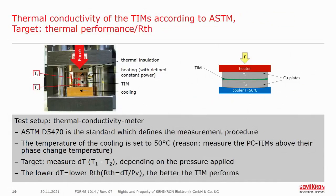To assess the thermal performance of the material in more detail, we examine the thermal conductivity according to ASTM standards. The setup includes two round plates pressed against each other with the TIM probe between them. One plate is heated up, the other cooled down. Then the temperature difference between these two round plates is measured — the smaller it is, the better, since heat is conducted more effectively. The cooler temperature was set to 50 degrees to allow all TIM materials to be viscous during the measurement.